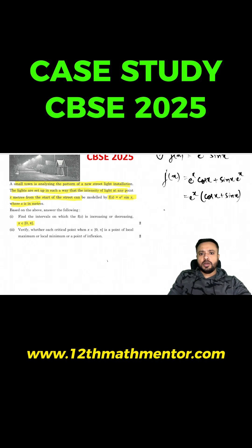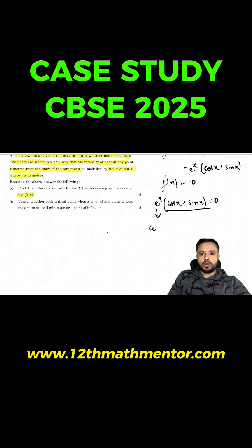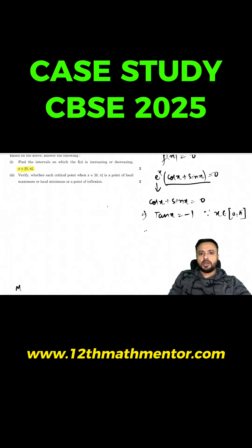To find the critical point, we equate f'(x) to zero: eˣ(cos x + sin x) = 0. Since eˣ can never be zero, we need cos x + sin x = 0, which means tan x = −1. Since x belongs to [0, π], the value of x is 3π/4. So x = 3π/4 is the critical point.